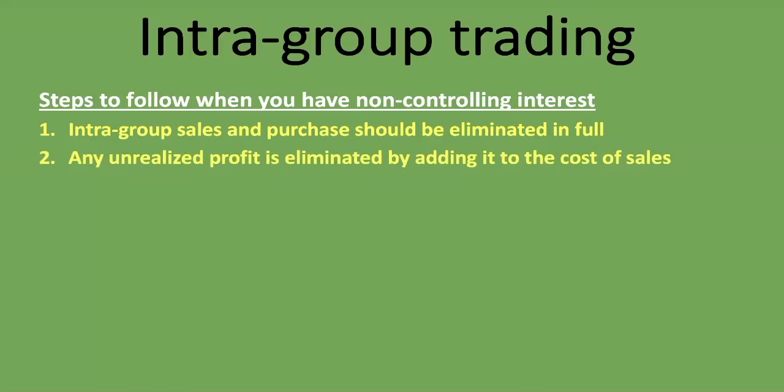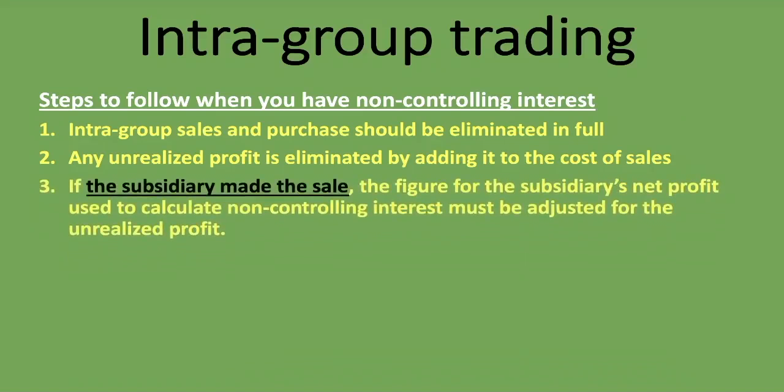Second, any unrealized profit is eliminated by adding it to the cost of sales. If goods bought from within the group remain unsold, we calculate the unrealized profit and add it to cost of sales. By adding it to cost of sales, we reduce the group's profits — which is correct, because we want to eliminate any unrealized profit not yet realized through sales to outside customers. Third, if the subsidiary made the sale, the subsidiary's net profit figure used to calculate non-controlling interest must be adjusted for the unrealized profit.